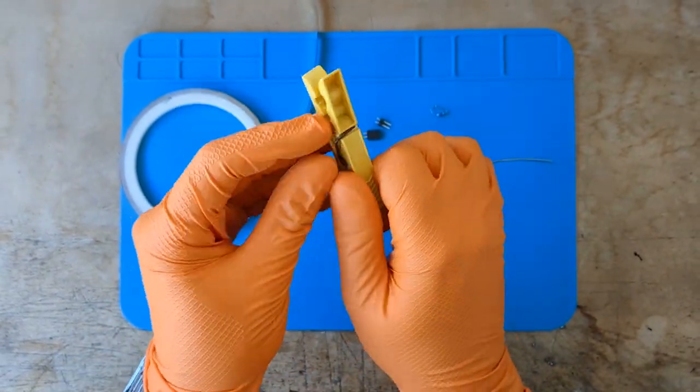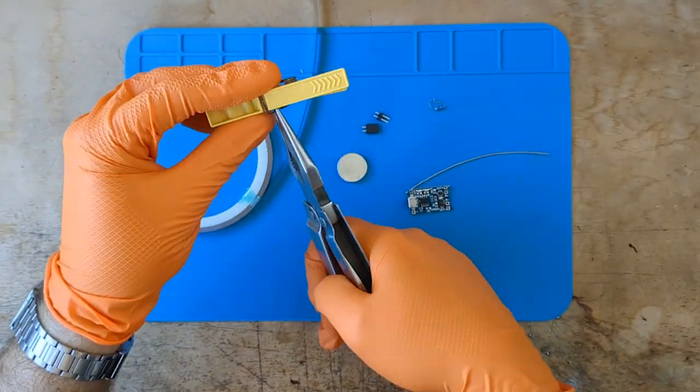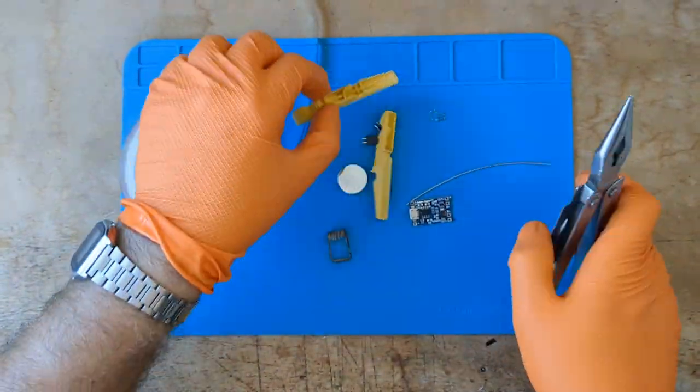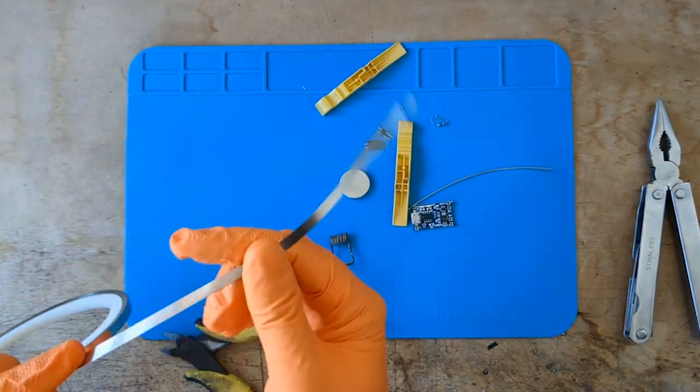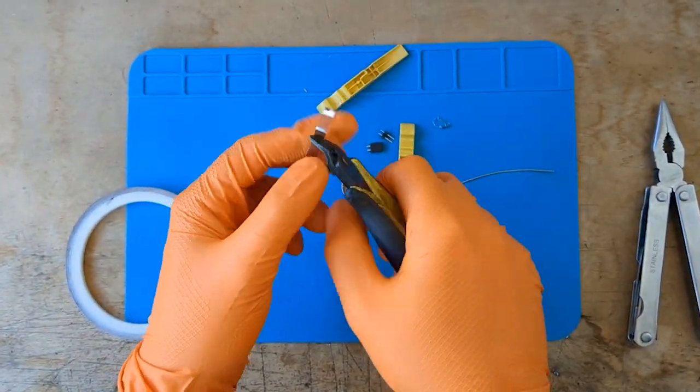Well, let's start disassembling the clothespin. At this point, let's cut two pieces of nickel strip.